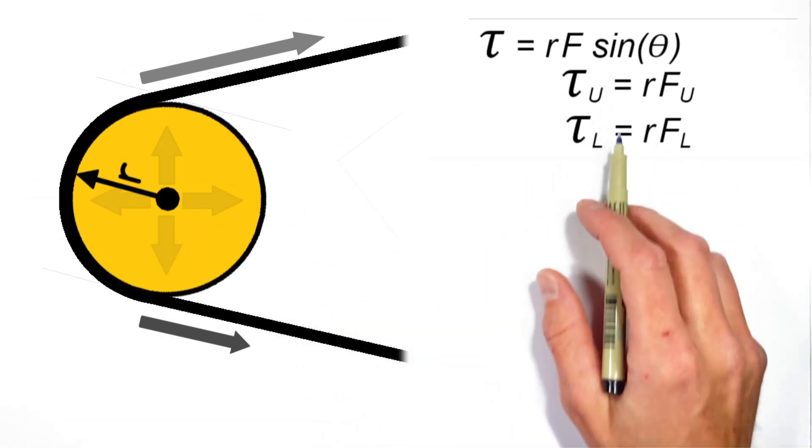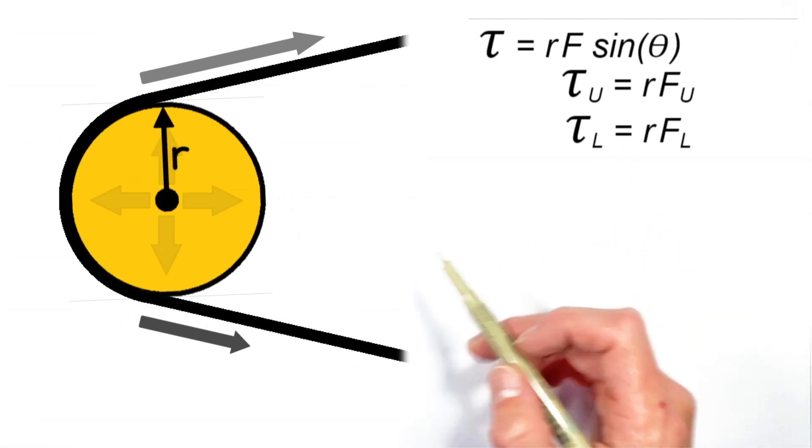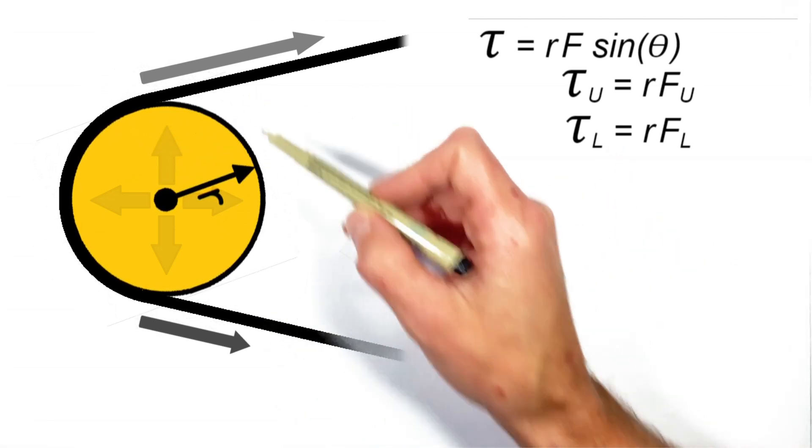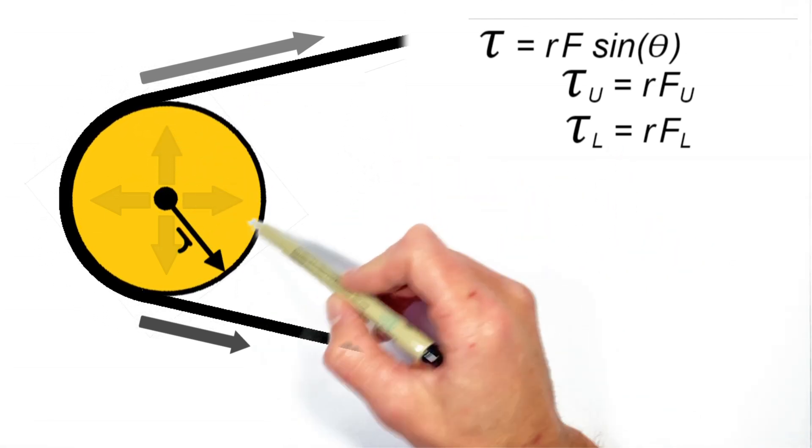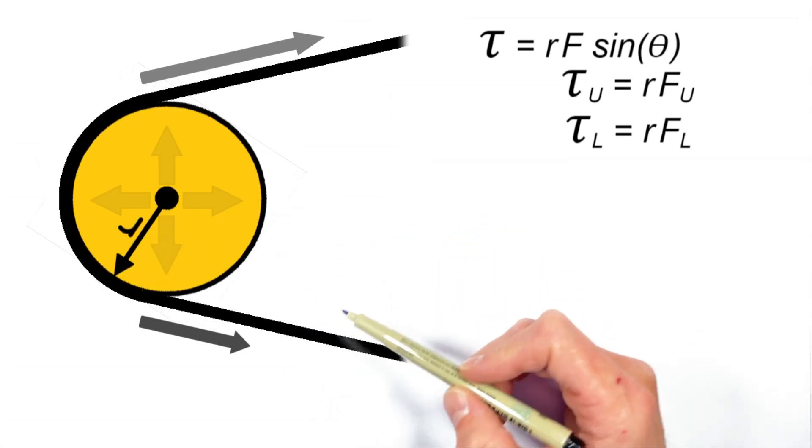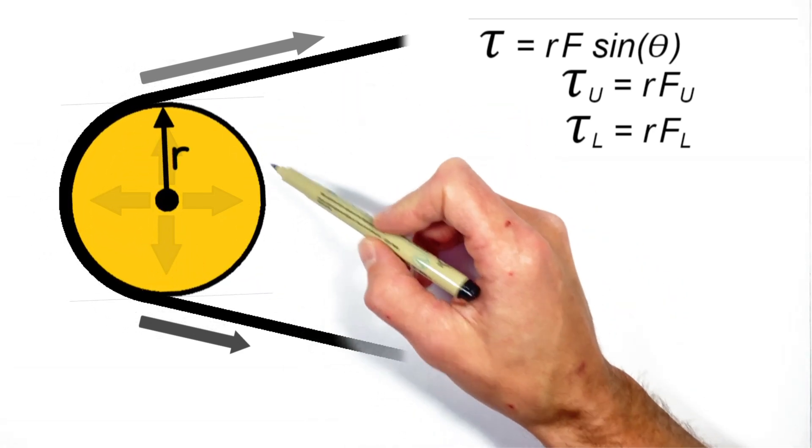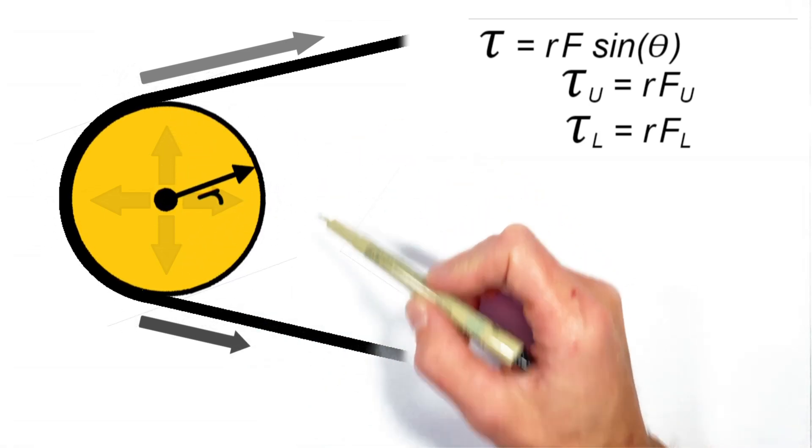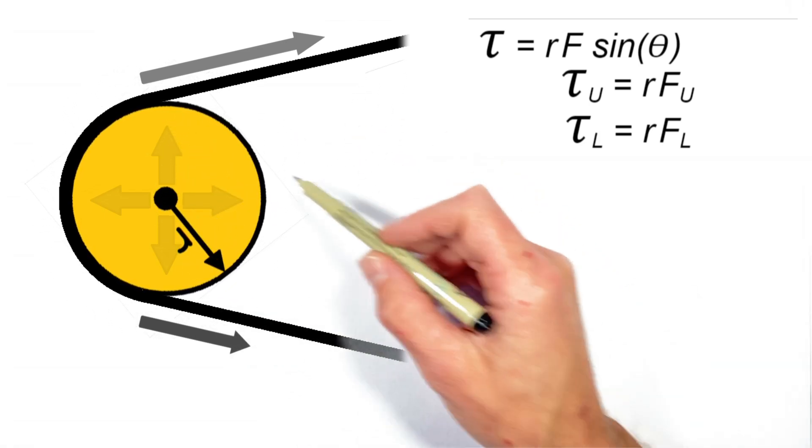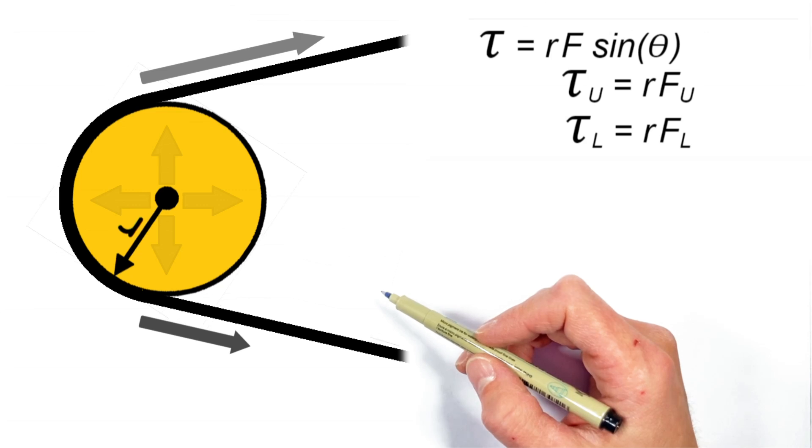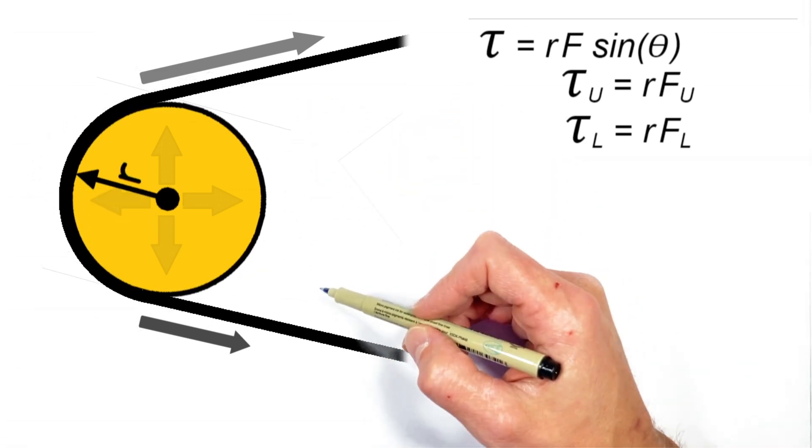But the key in relating these two torques to one another is in recognizing that these two forces are really producing torque on this pulley in opposite directions. This upper strand of the belt is trying to turn the pulley clockwise, whereas the lower strand is trying to rotate the pulley counterclockwise. These are two competing torques.